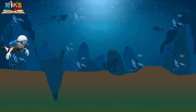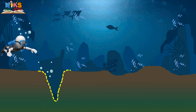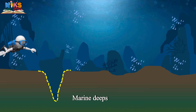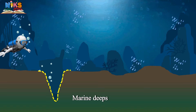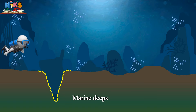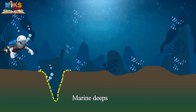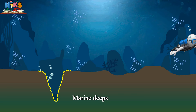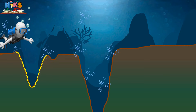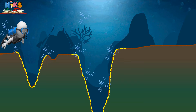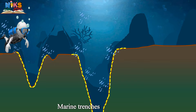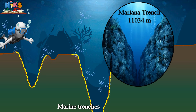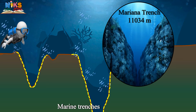On the ocean bed there are landforms which are deep, narrow, and steep — they are called marine deeps or trenches. The shallower ones are called marine deeps, while the deeper ones extending for longer distances are called marine trenches. The Mariana Trench in the Pacific Ocean is the deepest trench in the world, with a depth of around 11,034 meters.